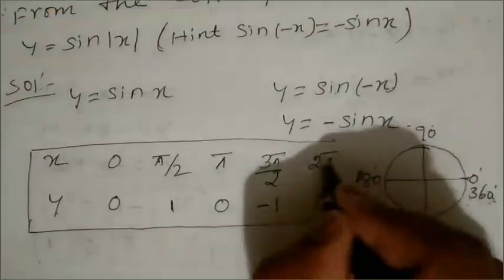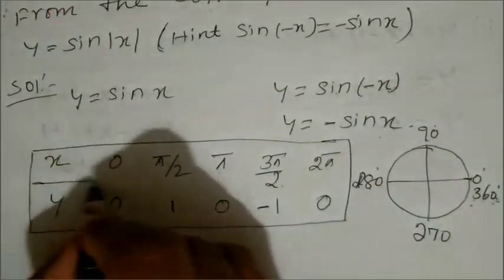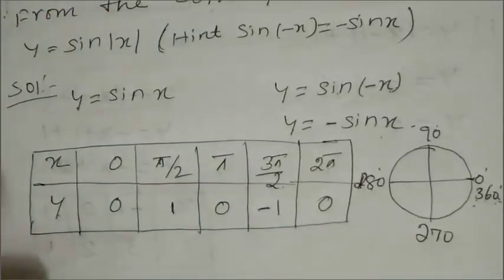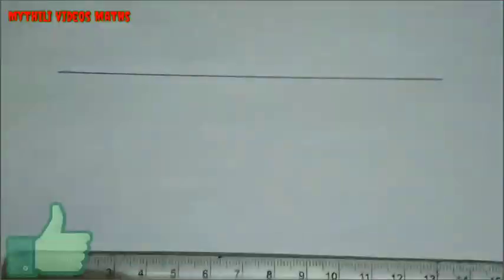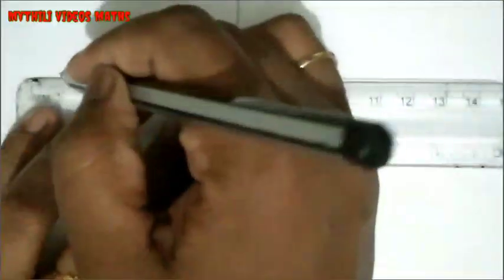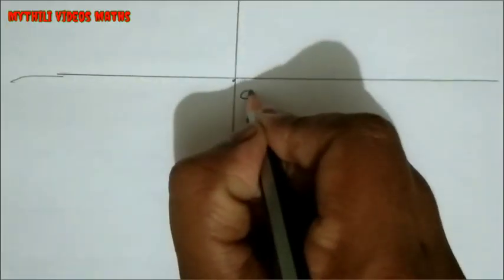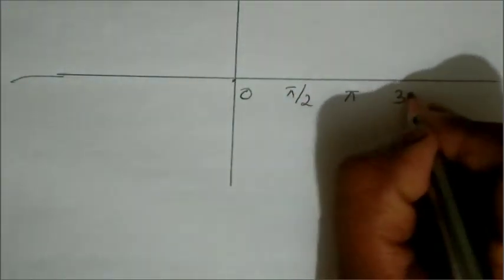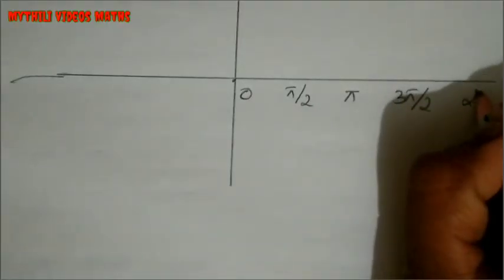From the table we use the graph. The right-hand side shows y equal to sin x. The key points are: at 0 it is 0, at π/2 it comes to 1, at π it comes to 0, at 3π/2 it comes to minus 1, and at 2π it comes back to 0.